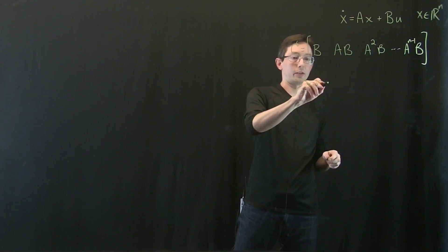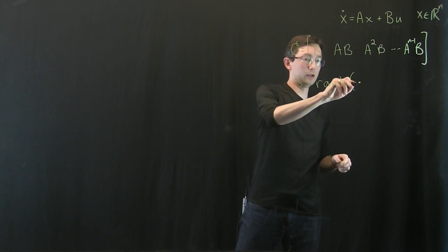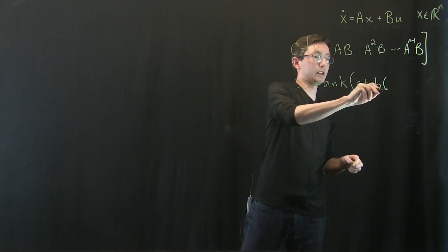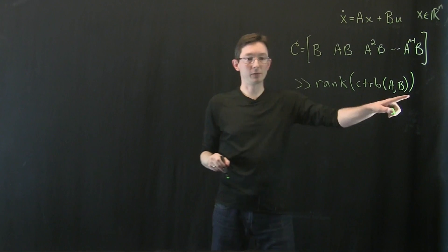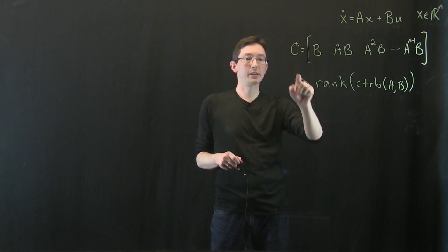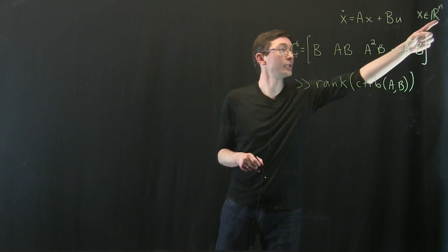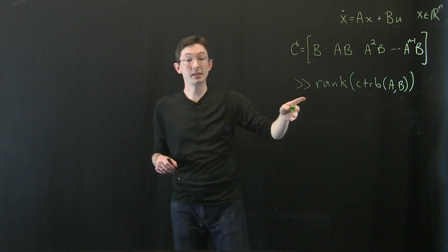For example, in MATLAB, if I look at the rank of this controllability matrix, rank of CTRB of A comma B, if this is rank N, so CTRB just gives me this matrix, if the rank of this is N, the dimension of my state space, then the system is controllable.